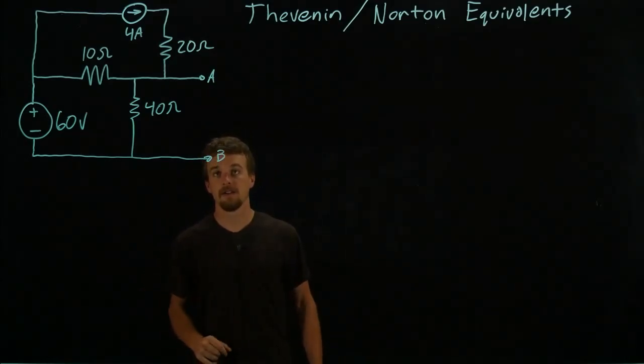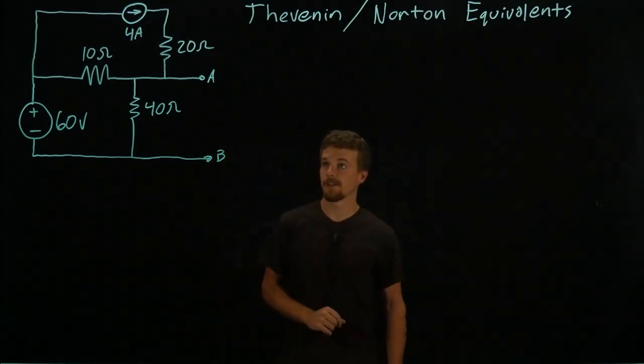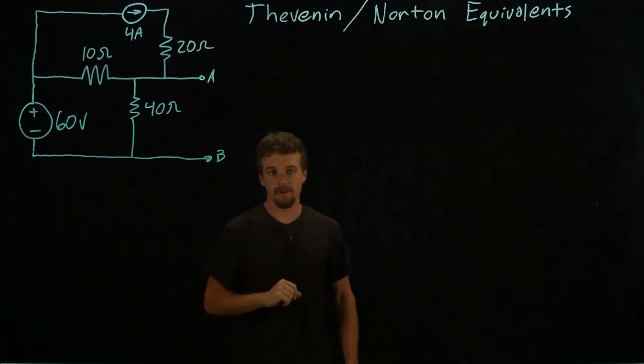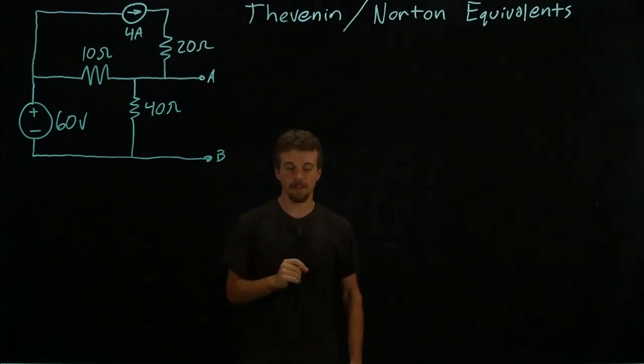we can find equivalent circuits that maintain the points A and B but reduce everything else to a single source and a single resistor.